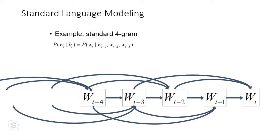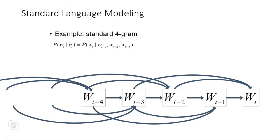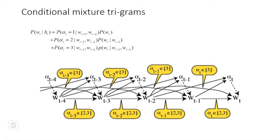From the NLP domain, here's an example using n-grams — specifically a 4-gram model. How do you select the t-th word given you have already selected the previous three words? So W_t is determined by W_{t-1}, W_{t-2}, and W_{t-3}. You can also have interpolated unigrams, bigrams, trigrams, and mixture trigrams — these are just illustrative examples.